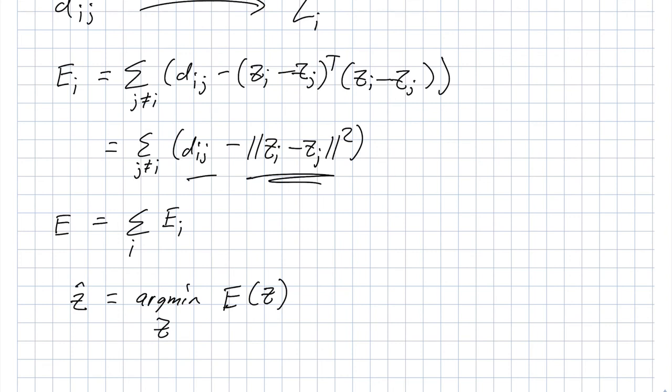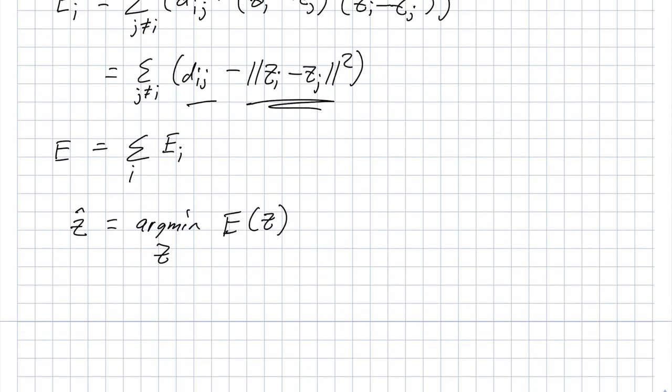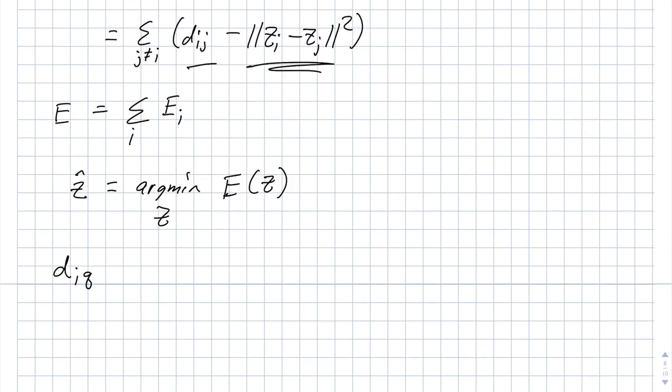All right, that's the essence of the mathematics. We're not going to work through the process of actually solving this. But I did want to say a couple of other quick things about MDS. For a query, so now I have a new, I know my distances between my training set and some query point. The process is going to be the same. I write a cost function for my query, which is just a sum over all of the samples in the training set. And then I have my distance from i to q.